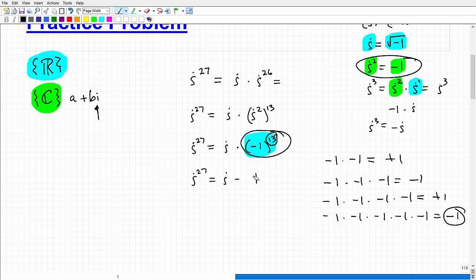That gives me i to the 27th is equal to i times negative 1. Let me write that a little bit better: i times negative 1. I can just go ahead and just take negative 1 times i. So we can just say i to the 27th is the same thing as negative i. And we are done.